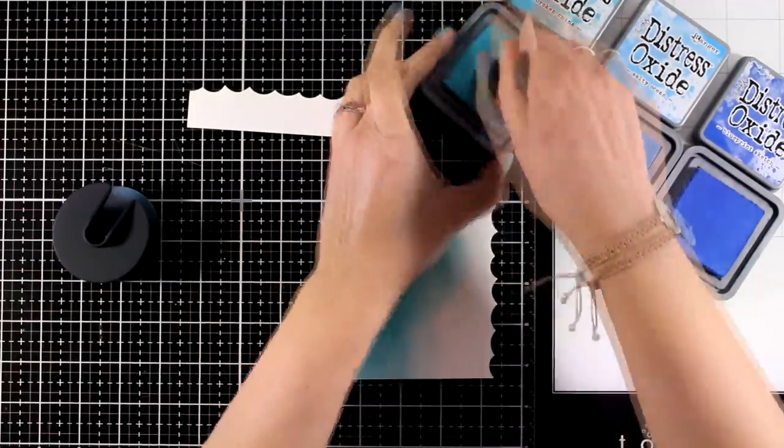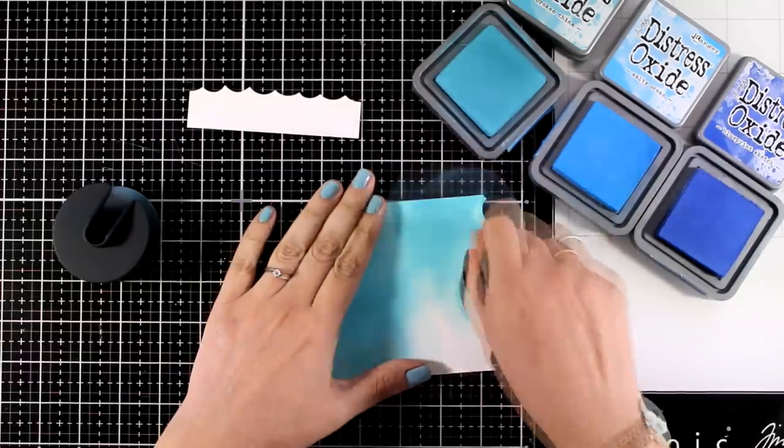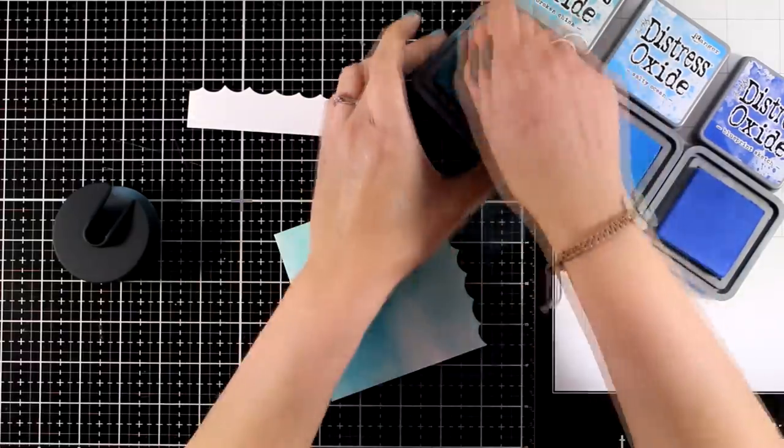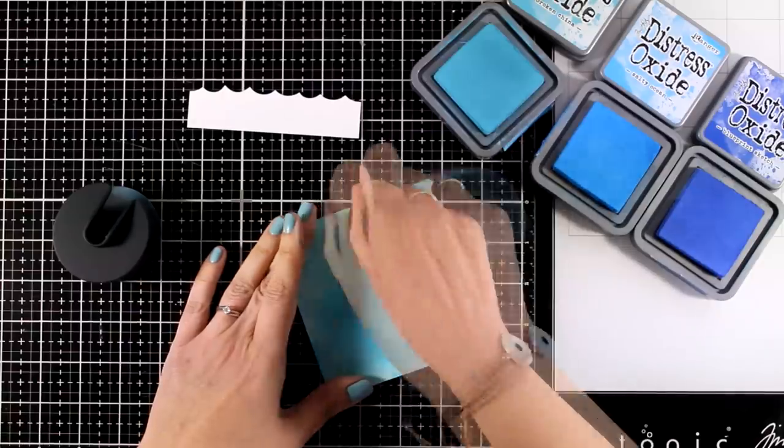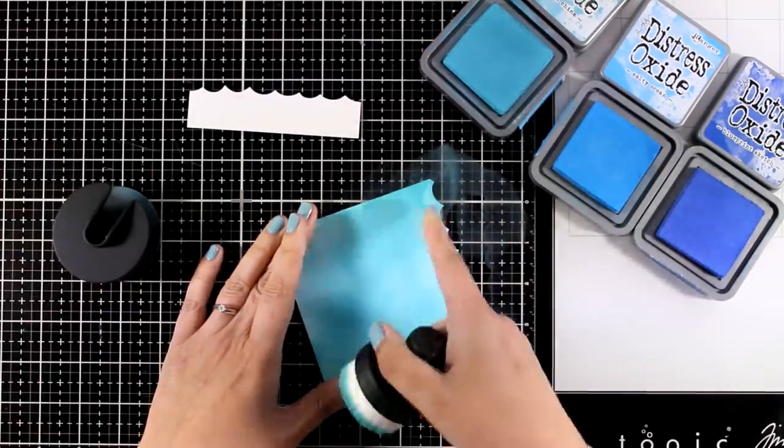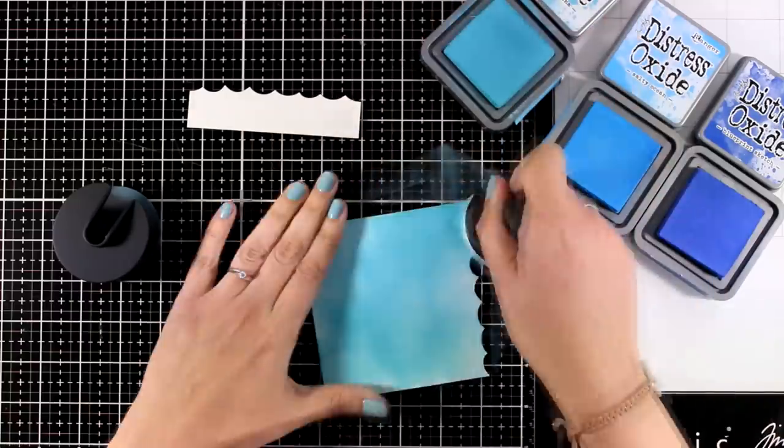Then I will switch to Salty Ocean and finally I will use the darkest which is Blueprint Sketch. I'm going for an ombre effect which is going to look wonderful for my underwater scene. Now at the top of my panel there you may see that I have a little booboo.